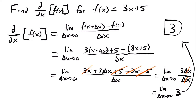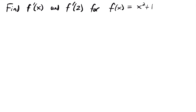The reason we do all this algebraic manipulation is that if we plugged in 0 directly, we'd have a 0 in the denominator, which doesn't allow us to evaluate the function. So every time we use the limit definition of a derivative, we must manipulate the function first because we already start with delta x — which approaches 0 — in our denominator. Also note: we can denote a derivative by writing f prime of x, which means the derivative of f(x).